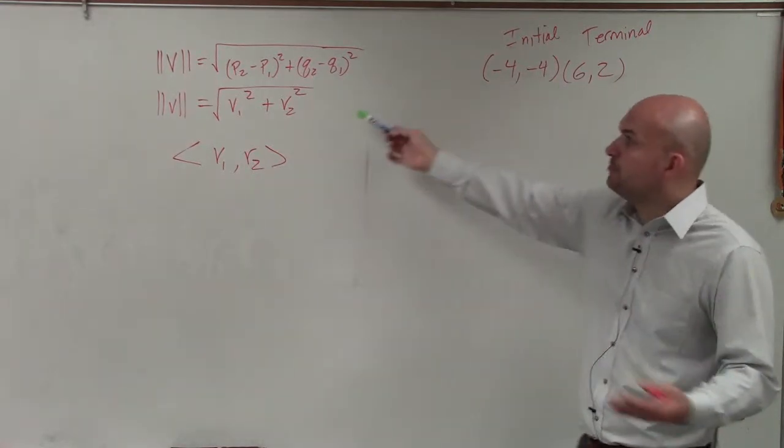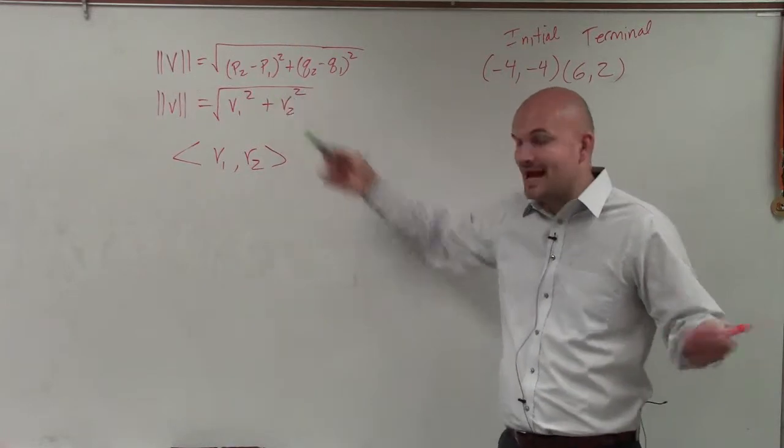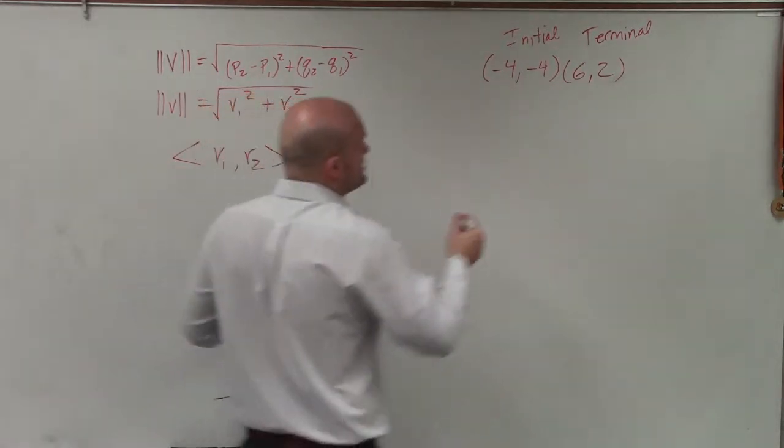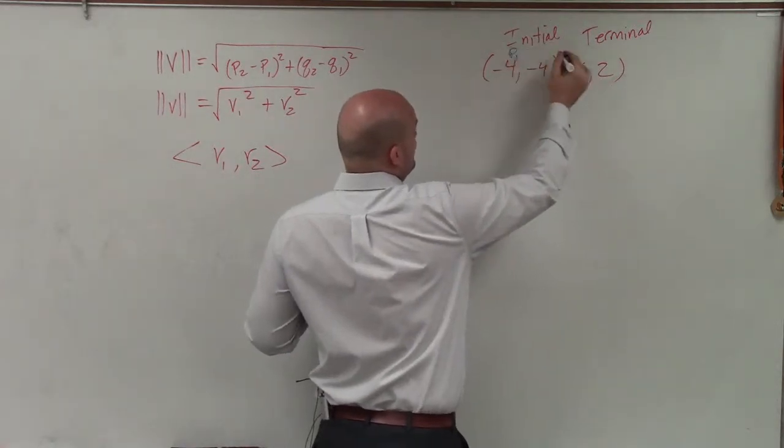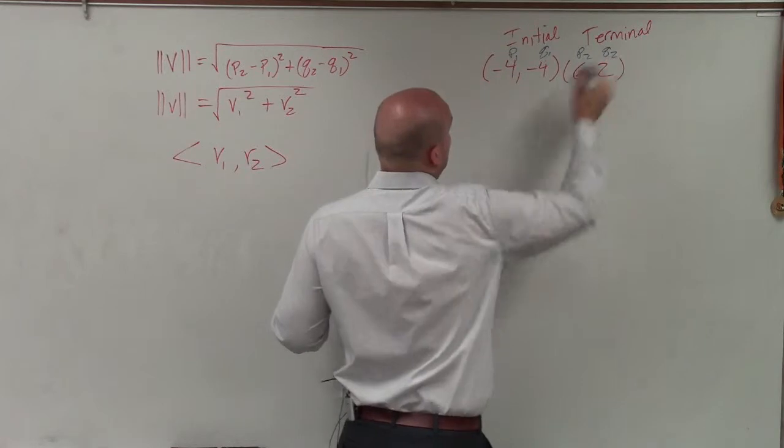We could convert this to its component form and then find the magnitude, if you like, or just plug it into the formula as is. The first thing we want to do is label what P1, P2, Q1, and Q2 are. So that will be P1, we'll call that P2, Q1, Q2.